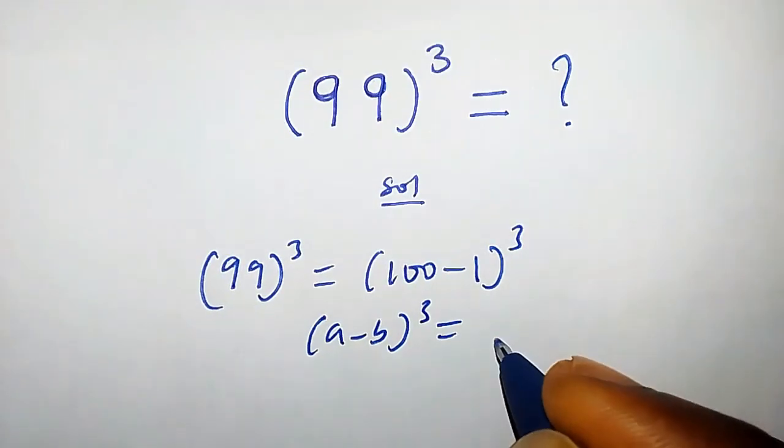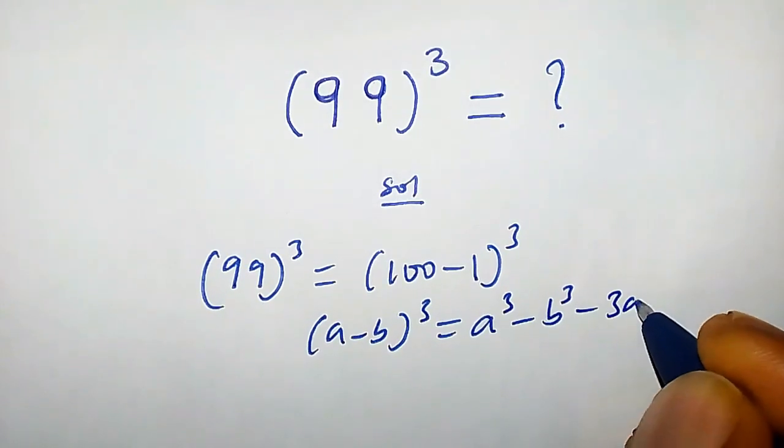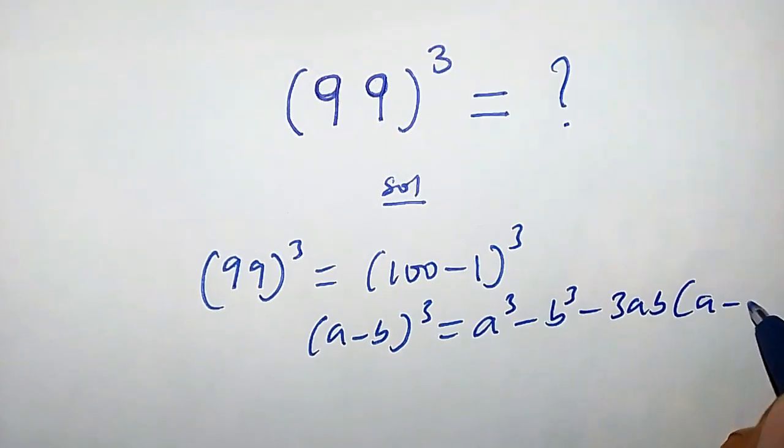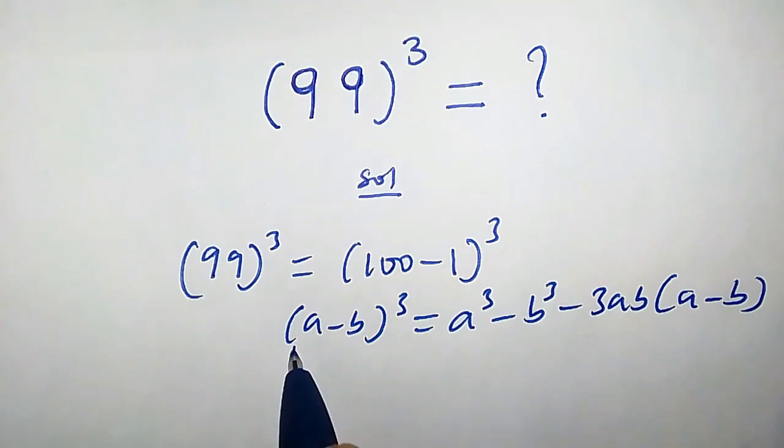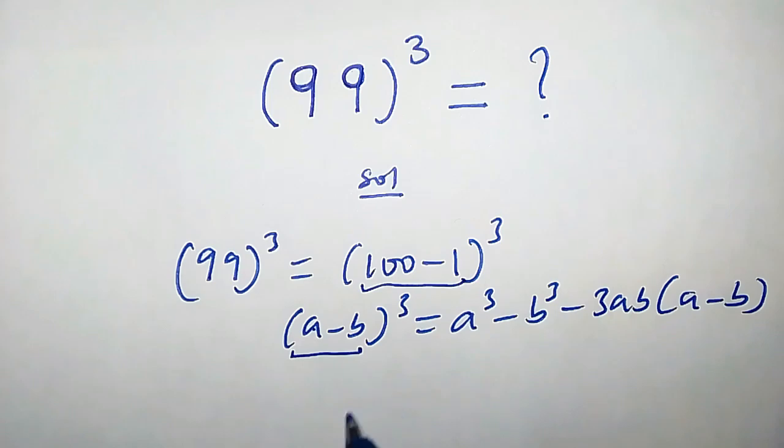to the power of 3, we can write it as a³ - b³ - 3ab(a - b). By comparing the left hand side with this, you observe that a is 100 and b is 1.